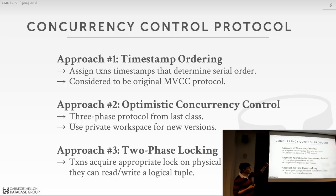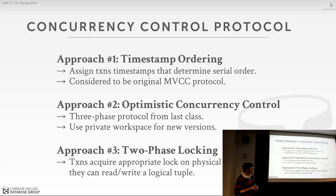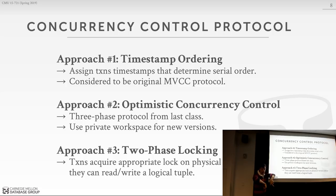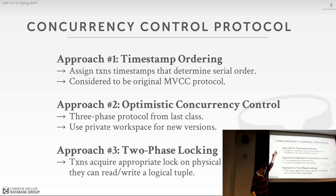I'm only going to focus on timestamp ordering and two-phase locking protocols. OCC is basically timestamp ordering but with private workspaces. In the original MVCC paper from the 1000-level course, we were actually following what was done in the original 1978 dissertation — MVCC with timestamp ordering. But as we'll see when we talk about what real systems actually implement, they're doing a combination of all of these things. There's no one standard MVCC algorithm, even though systems claim they use MVCC — you need to drill down to understand which of these three they're actually doing.